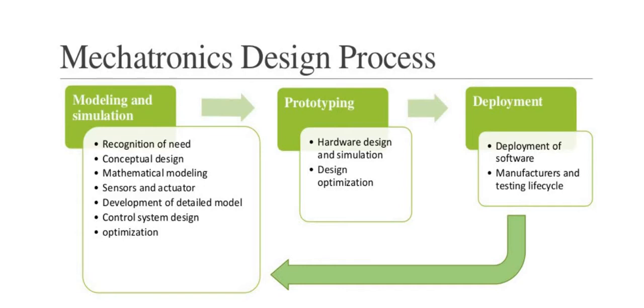Mechatronics design process. What actually happens in mechatronics design? It is a process that consists of different kinds of tasks. The first is modeling and simulation, then prototyping, and then deployment. The first step of the mechatronics design process is modeling and simulation.